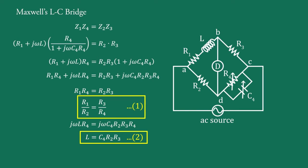These two equations represent the conditions of bridge balance. Both balance conditions are independent of each other and of frequency. These conditions are satisfied by successive adjustment of C4 and R4, which are chosen because each occurs in one balance condition only. Hence adjustment of R4 sets condition 1 without upsetting condition 2.